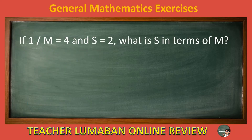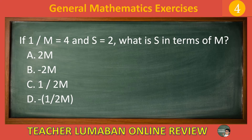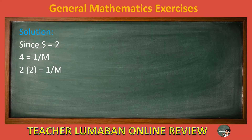If 1 over M equals 4 and S equals 2, what is S in terms of M? Letter A: 2M. Letter B: negative 2M. Letter C: 1 over 2M. Letter D: negative 1 over 2M. Choose the suitable answer in 5 seconds. 5, 4, 3, 2, 1. The correct answer is Letter C: 1 over 2M. Solution: Since S equals 2 and 4 equals 1 over M, then 2 equals 1 over M times 2, so S equals 1 over 2M. The answer is 1 over 2M.